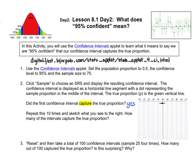Next, you're going to click the sample button nine more times so that you have a total of 10 samples. Each one of those samples is going to be the center, or the point estimate, for a confidence interval, so we're going to end up with a total of 10 confidence intervals. Pause the video, collect your nine additional samples, draw them in, and then turn the video back on so we can continue.